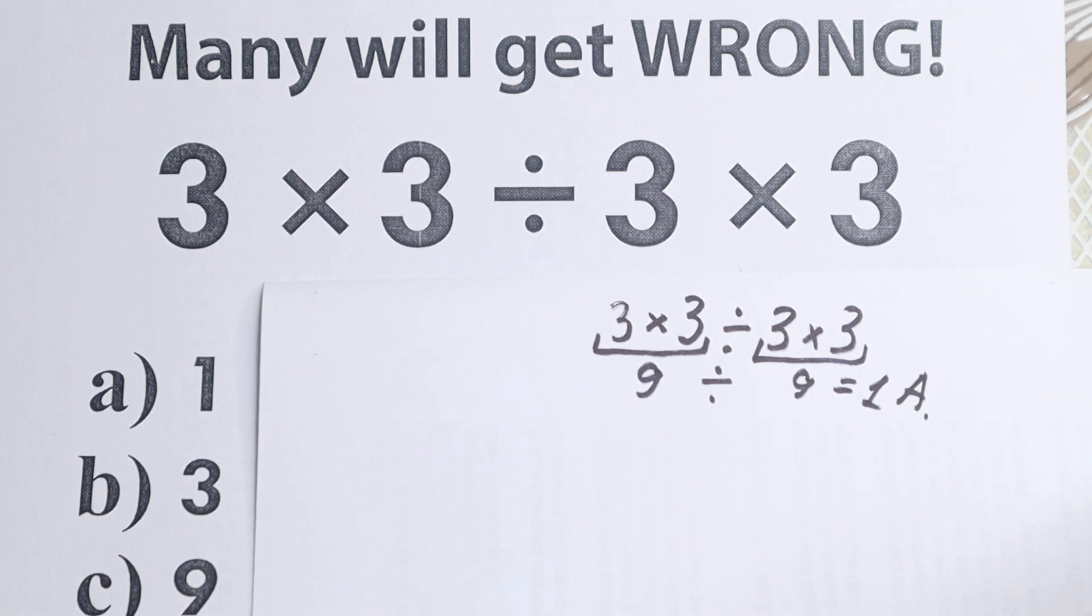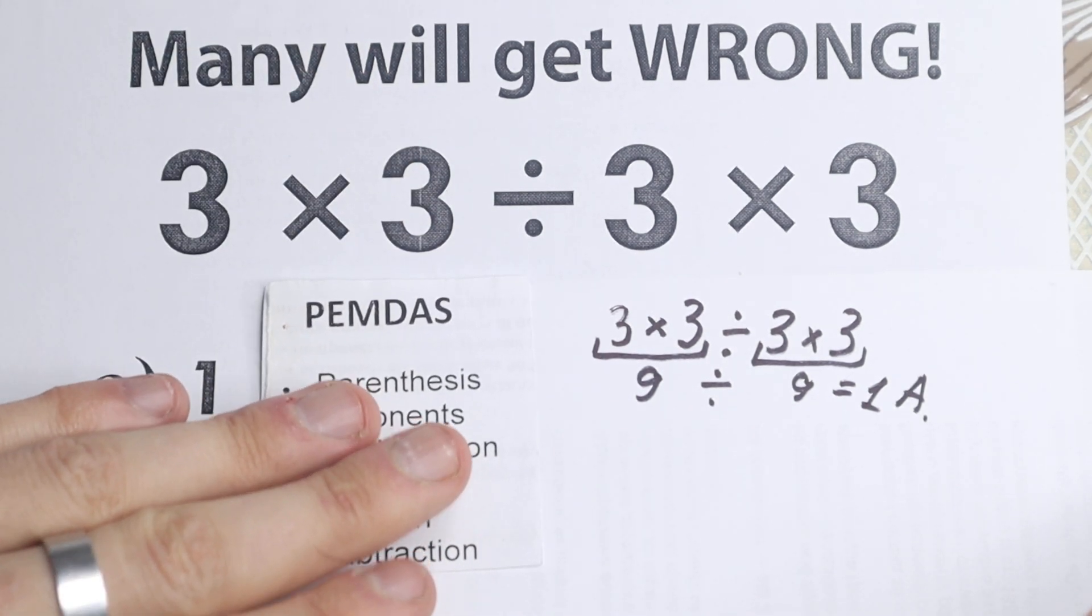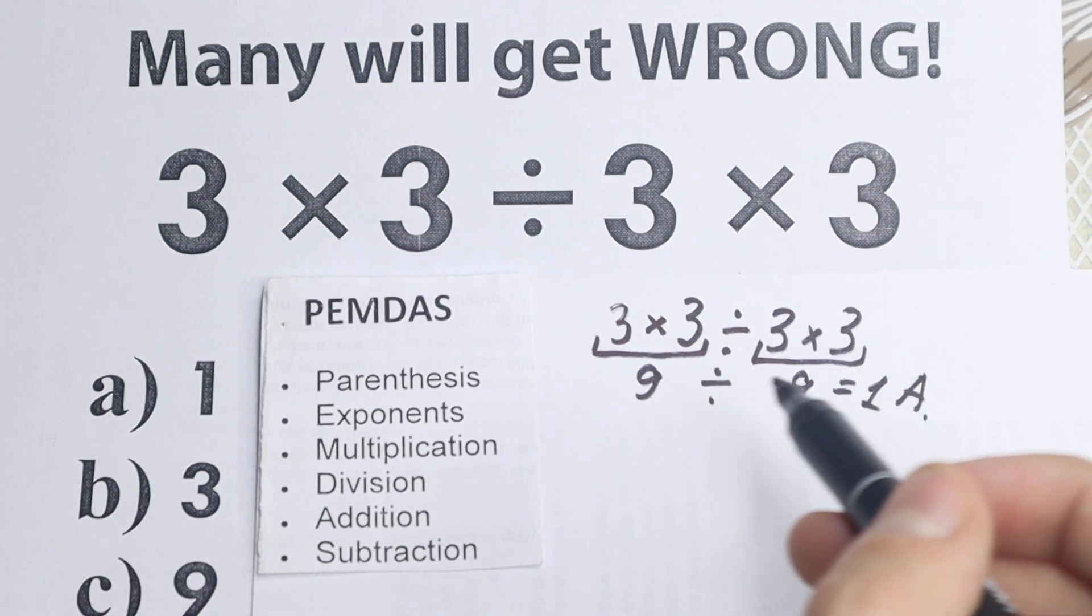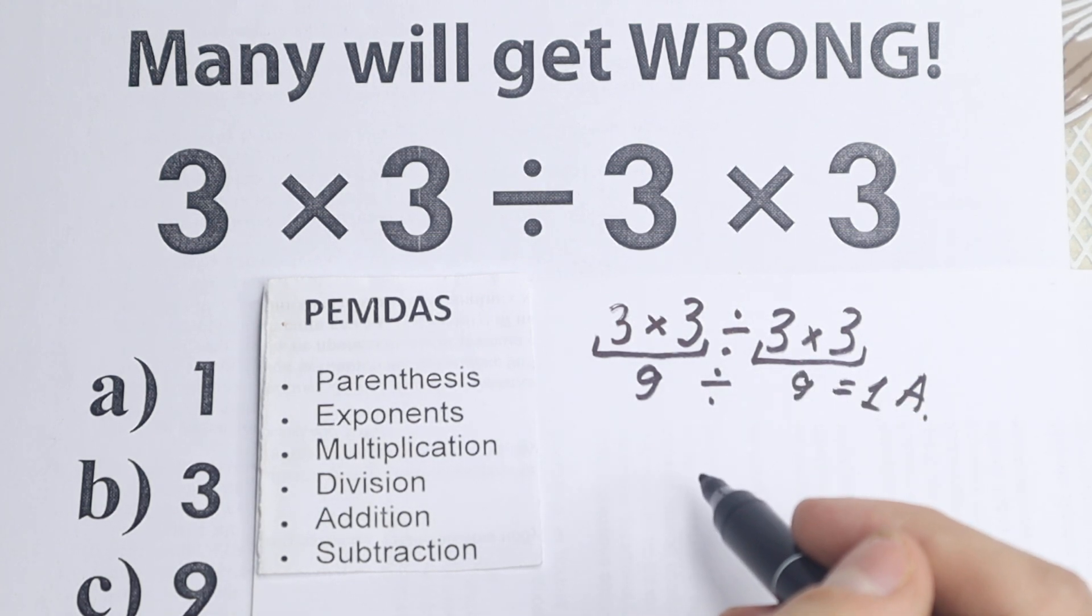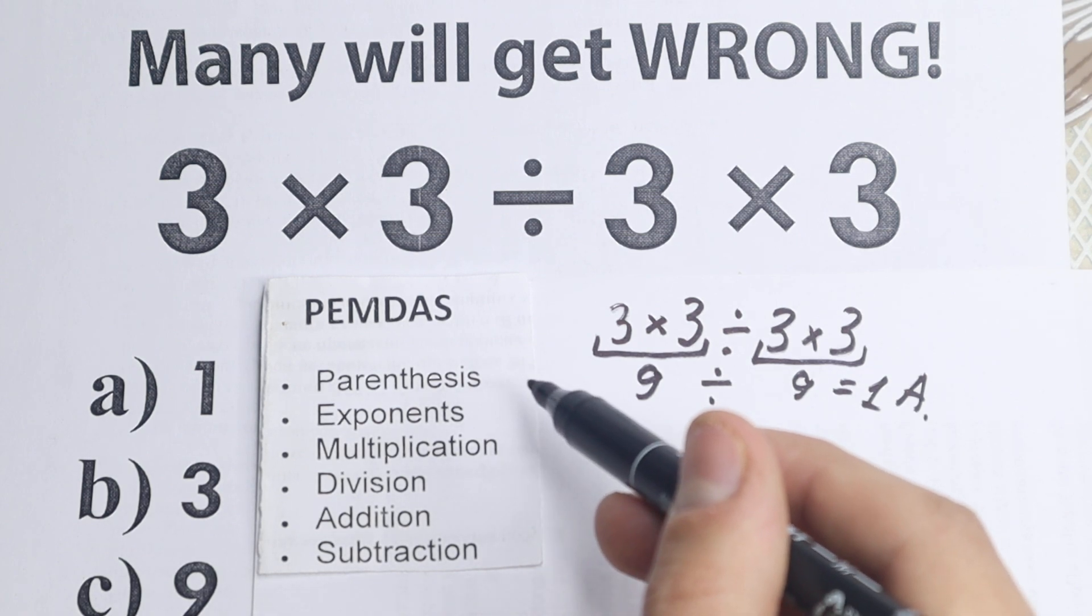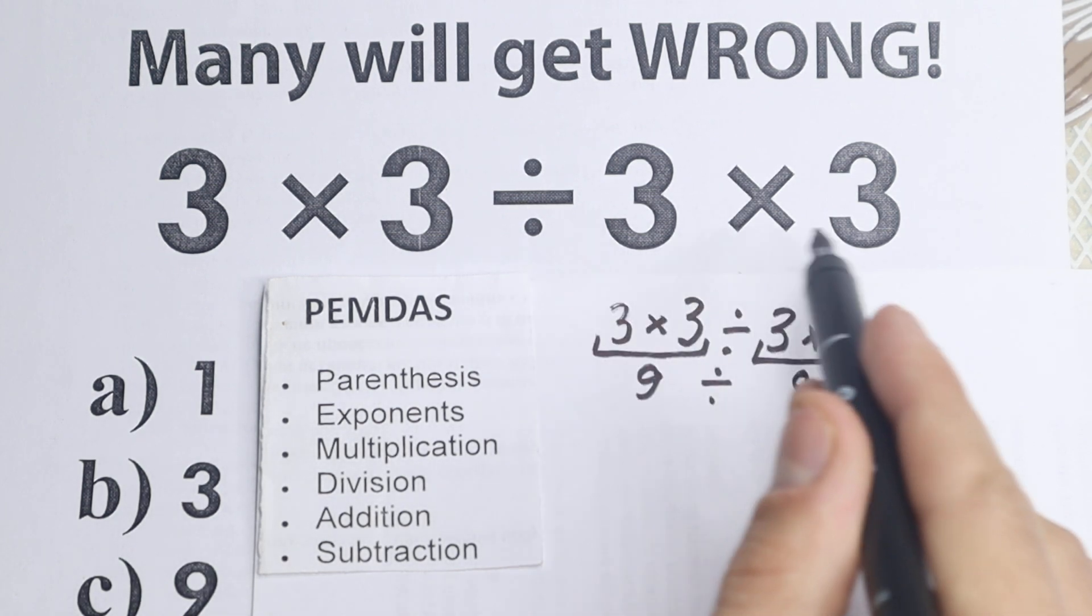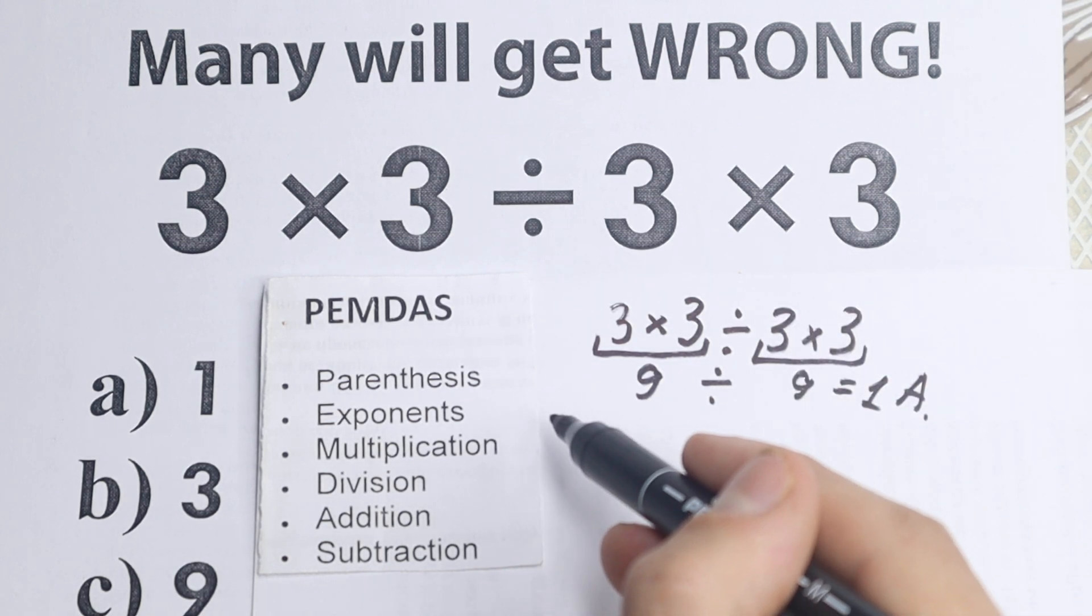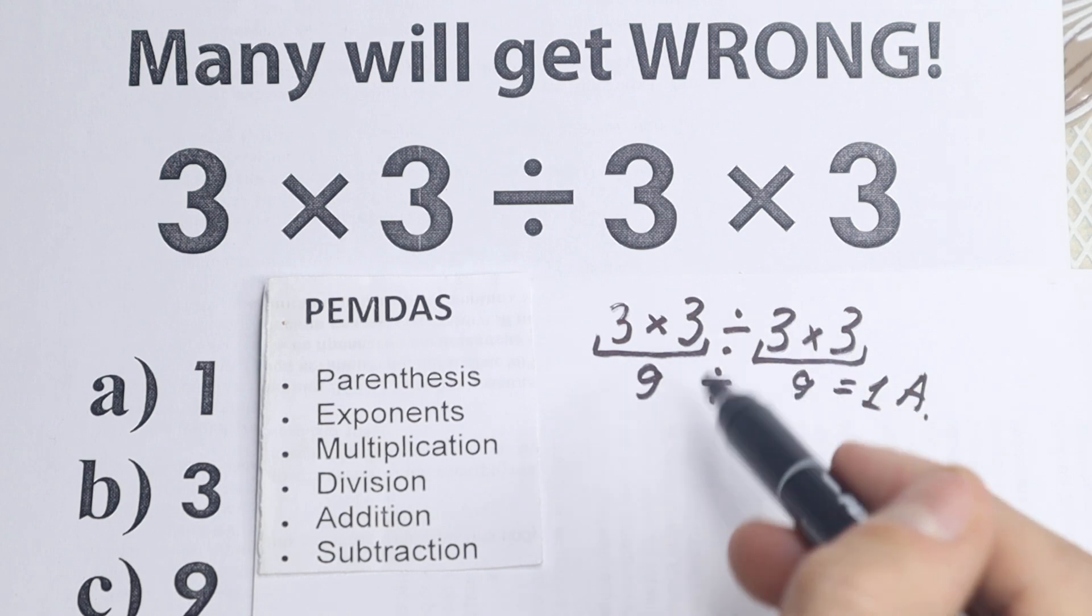But I want to show you a correct order of operations. Right here we have PEMDAS order. A lot of, maybe all internet libraries, all scientific graph and calculator works according to this order. So let's try to solve it according to this order of operations. First of all we have parentheses. This is the first main step. We need to start with parentheses, but right here I don't see any. So we don't have parentheses. Moreover, we don't have exponent right here. So I don't see any exponents.